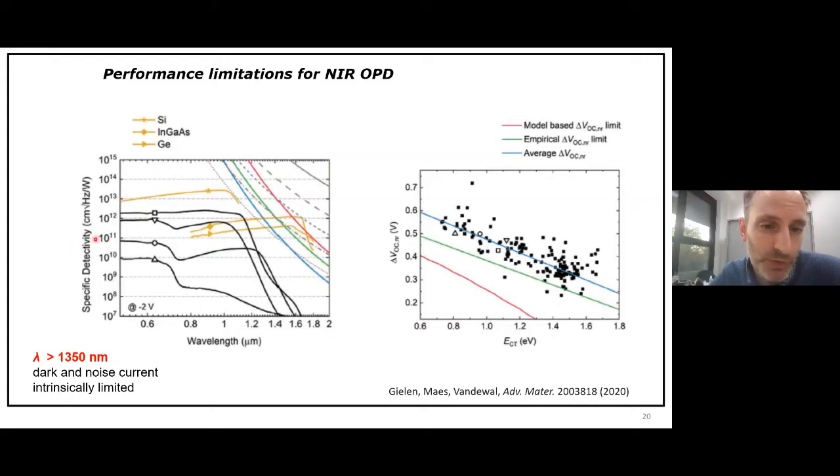So for silicon, for example, this specific detectivity in this range, this is the absorption range of silicon. It goes over 10 to the power 13. For the InGaAs detectors and germanium detectors, we're more here 10 to the power 12, but they, of course, extend to wavelengths around 1,800 nanometers. The black curves are the best organics, at least beyond, which go beyond the thousand nanometer, which we have. So they're not as good as silicon. They extend the wavelength range a bit. They are in that wavelength range a bit better than InGaAs, but InGaAs goes deeper.